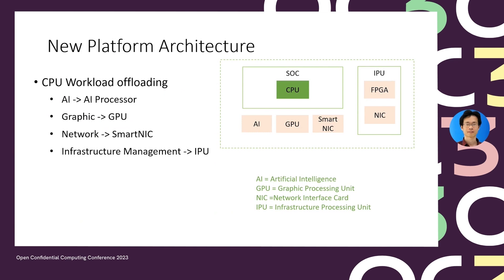Today we are seeing new platform architectures to support CPU workload offloading for better performance. For example, AR workload is offloaded to an AR processor, graphics to GPU, and we have smart NIC and IPU to support network and infrastructure management.